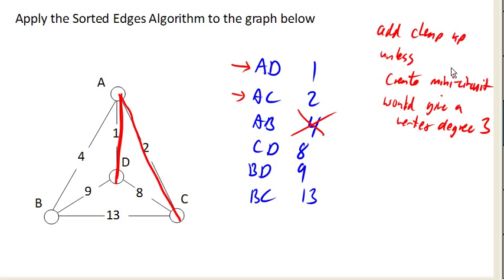C to D, cost of 8. We'd love to add that one. What happens if I add that one? Notice now we have that mini circuit. We have a circuit that it does not include vertex B, and so that is bad. I should not be adding that edge.